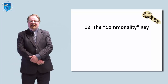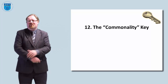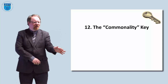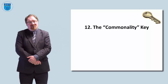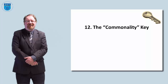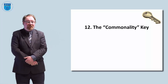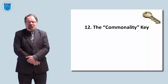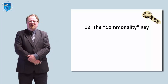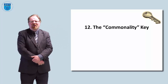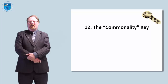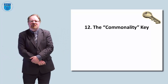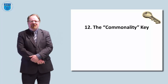Number 12 is the commonality key. So pick any two items and list what they have in common. Let's say a dog and a table — they both have four legs, they are both often found in homes, both need cleaning occasionally, and both have owners. So there's a lot of things they have in common. Pick any two diverse objects and think about what they share.